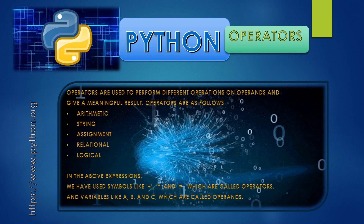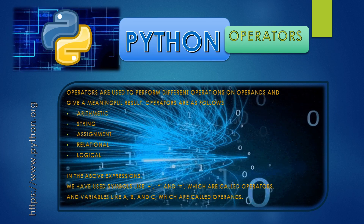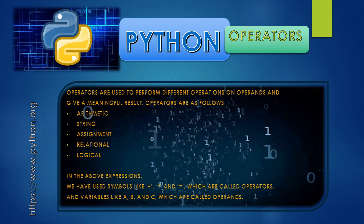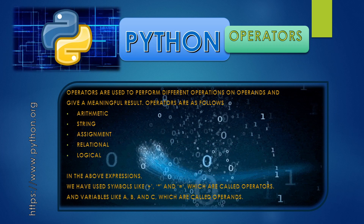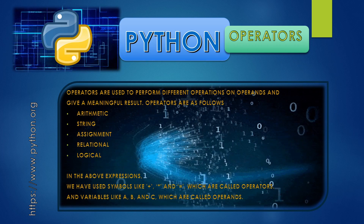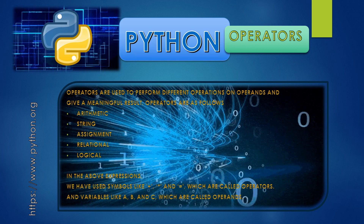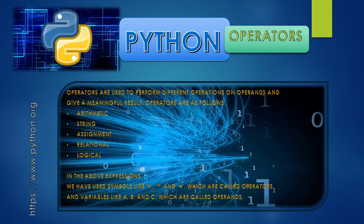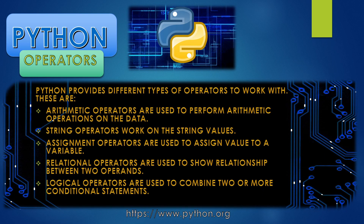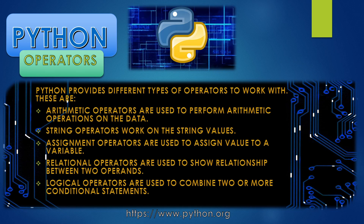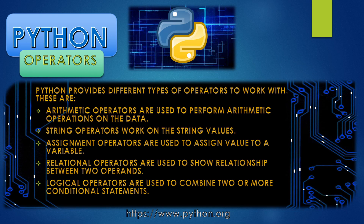The operators are as follows: arithmetic, string, assignment, relational, and logical. In the above expressions, we use symbols like plus, multiply, divide, and equal. All these are called operators, and variables like A, B, and C are called operands. Python provides different types of operators: arithmetic operators, which are used to perform arithmetic operations on the data.